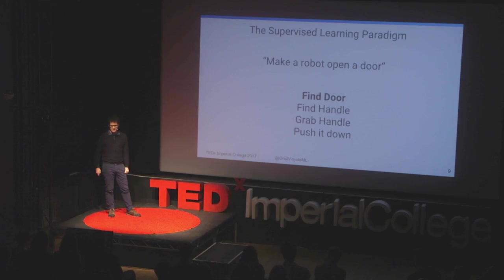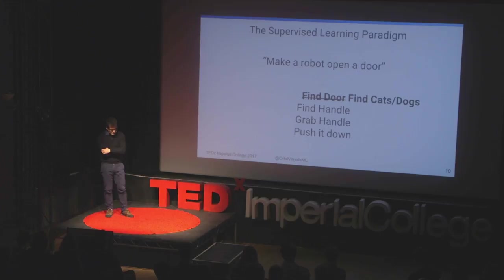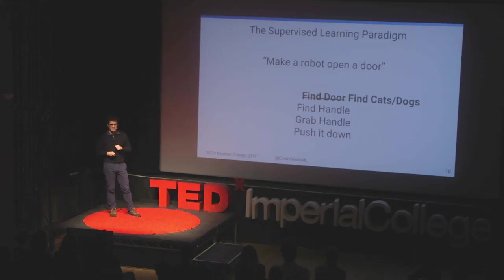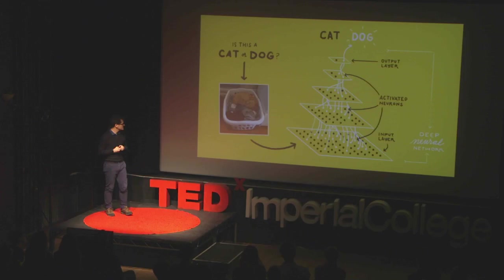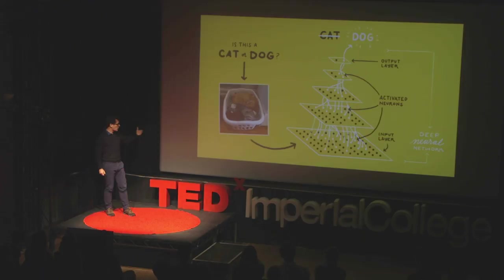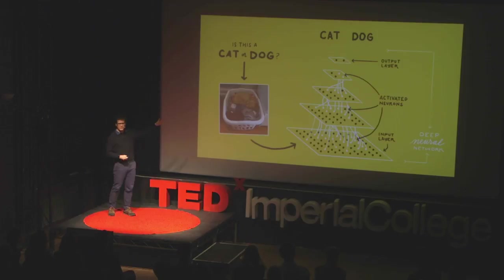In computer vision, people care about other objects, not just doors, and people generally don't take pictures of doors. So I'm going to show you an example of finding cats and dogs, which are very popular objects in the research community. The first step to finding whether an image contains a cat or a dog is to build a big database of pictures containing either cats or dogs, and then literally ask humans to label thousands or tens of thousands of examples of images like this one, which actually is a dog — although this one is pretty tricky.